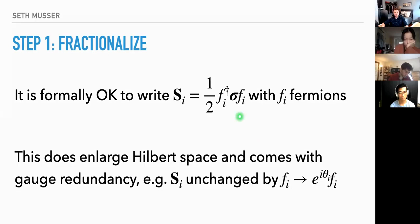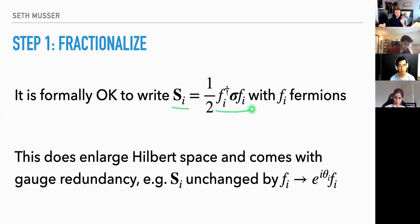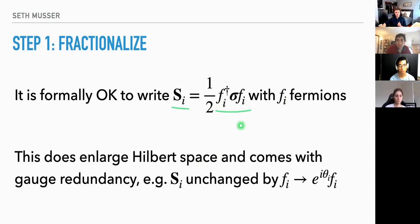To fractionalize we write the spin operator in terms of complex fermions. You can verify that when we look at the anti-commutation relations of these fermions, the spins have the right commutation relations. This enlarges the Hilbert space from two to four degrees of freedom per site — each fermion has two spin states. We also introduce a gauge redundancy: we can redefine each fermion f_i by a phase e^{iθ_i} without changing the definition of the spin at all.